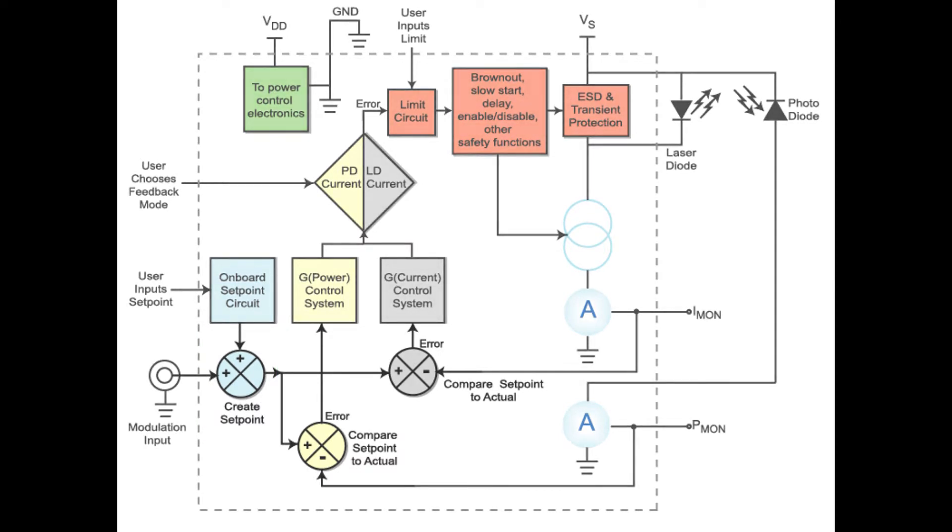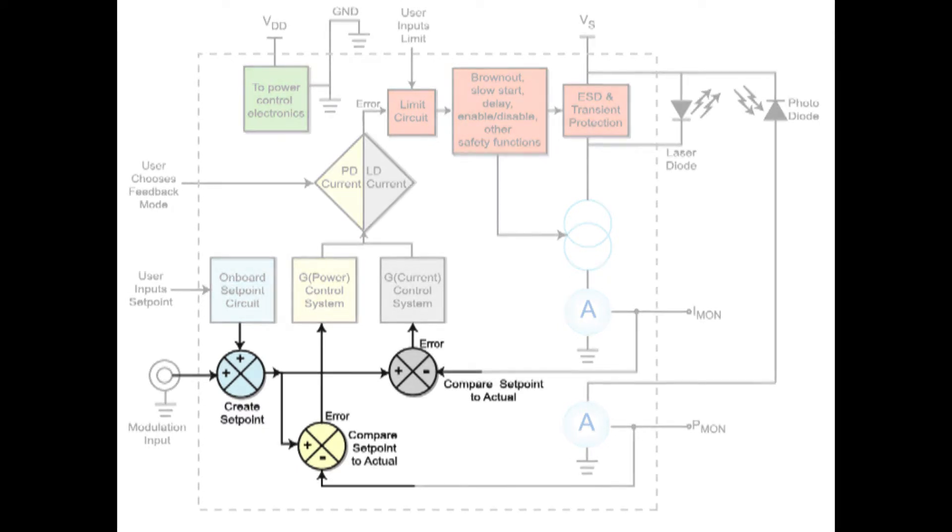The system compares the actual current level to the setpoint current level. These two voltages are subtracted, and the result is called the error. The control function converts the error signal into a control signal. It is not the same for constant power or constant current mode.